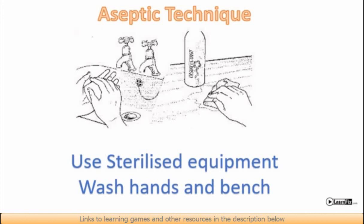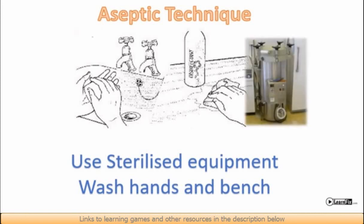Sterilizing the equipment is usually carried out using an autoclave. That's a device that heats water containing the equipment and it allows the pressure to build up so that the water boils at a higher temperature than normal above 100 degrees centigrade.